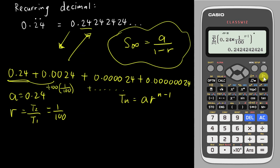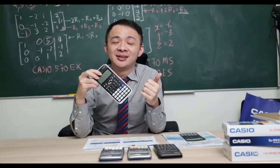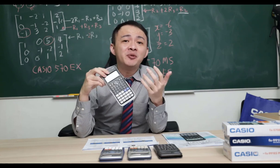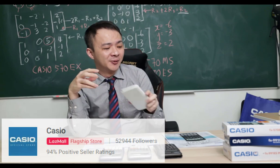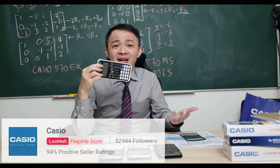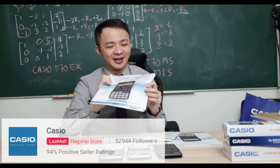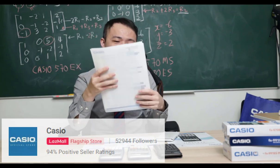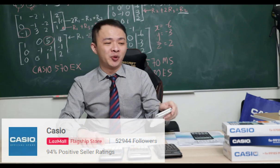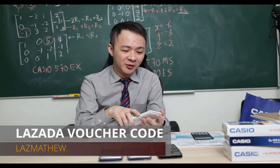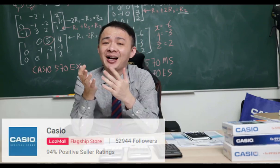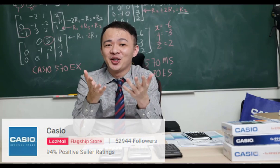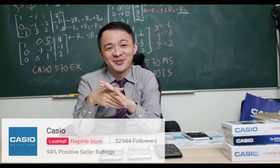That's how to use the sigma button to solve for AP, GP, and recurring decimals. I hope you find this video helpful. If you're interested in buying this calculator, I'll share the link in the description below, which leads to the Casio flagship store. Right now Casio Malaysia is running a promotion — whoever buys the calculator from them gets a free Casio ELF file, which is waterproof. If you use the promotion code — which I'll share in the description — you get an additional 5 ringgit discount. If you have any questions, post them in the comments below. See you in the next video!